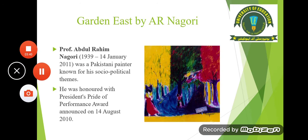Garden East by A.R. Nagori. Professor Abdul Raheem Nagori was born in 1939 and died in 2011. He was a Pakistani painter known for his social and political themes, and he was honored with the President's Pride of Performance Award announced on 14th August 2010. As you can see the style, we are looking at an abstract art form — the use of colors, planes, and texture. There is a lot of texture. Every artist has their own individual style.